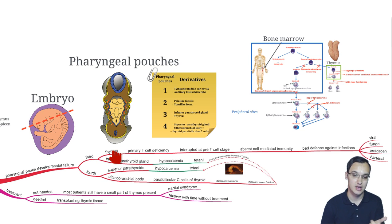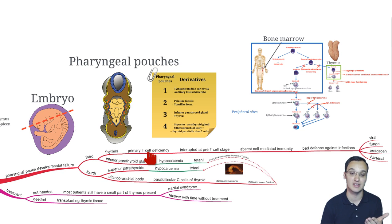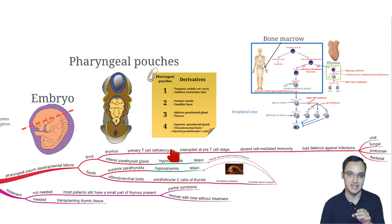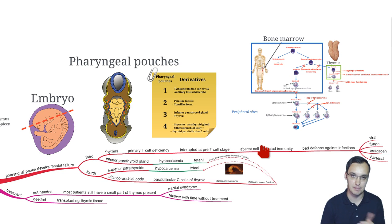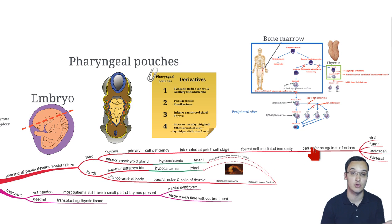Since we don't have a functioning thymus, the T cell maturation is blocked. We have absent cell-mediated immunity, so we have bad defense against infections like viral, fungal, protozoan, and bacterial infections.